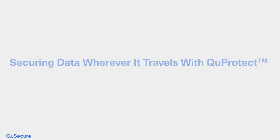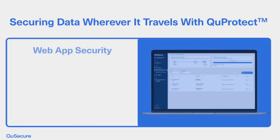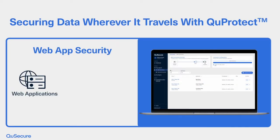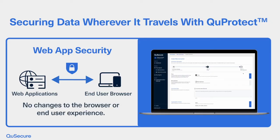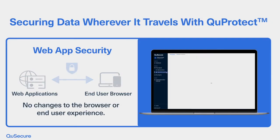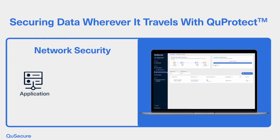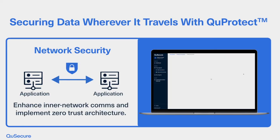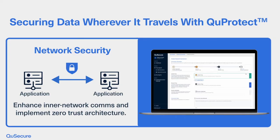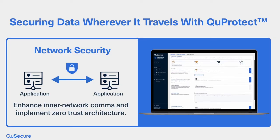QProtect facilitates secure data wherever it travels. QProtect Web App Security enables quantum-secure sessions between web applications and browser users on any device without changing the browser or user experience. QProtect Network Security strengthens backend application sessions, enhancing inner network communications with cutting-edge encryption and zero-trust architecture.